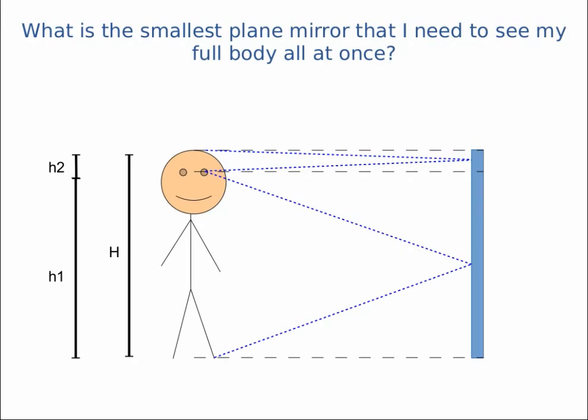I know that light's going to hit my body, and for example on the top of my head it's going to bounce off of the mirror and bounce into my eyes. For example, when it hits my feet it's going to bounce off of the mirror and bounce into my eyes.